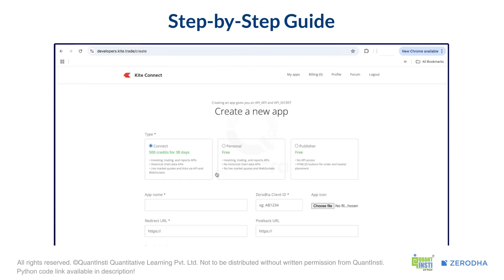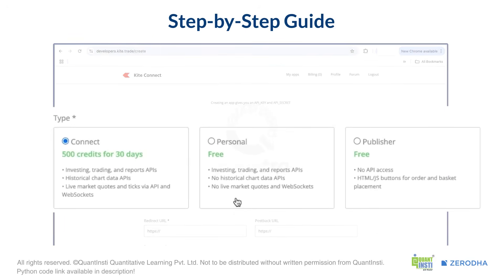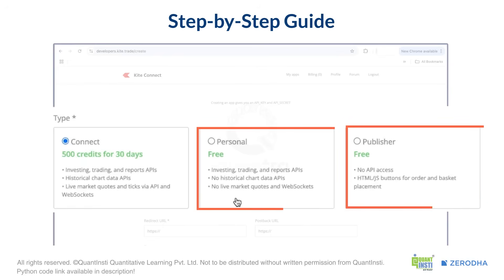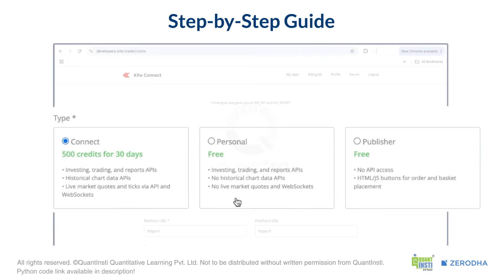Now, a small but important choice. You'll see different app types. In Personal, you can check your portfolio details. In Publisher, you can embed buttons for order placement only. Publisher and Personal apps are free, but don't give you data access. If you want to get access to data and build something to automate trades, you'll want to select Connect.